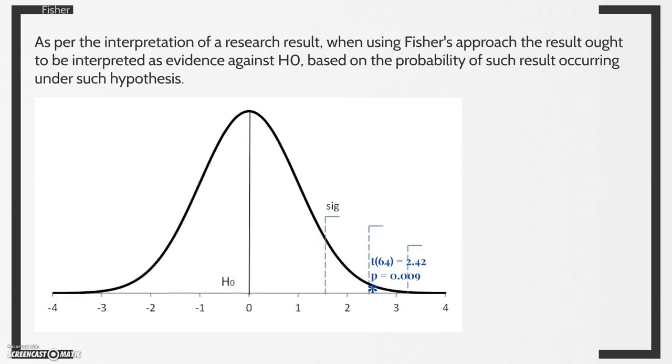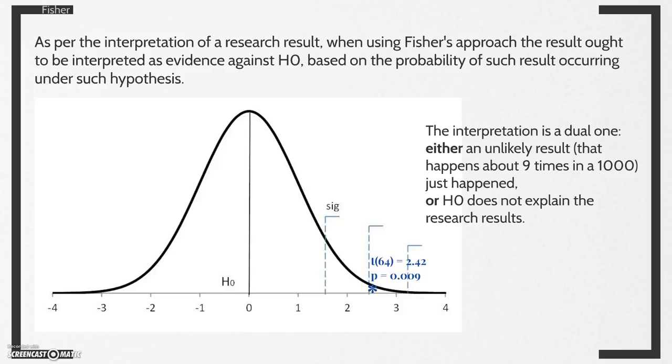As per the interpretation of a research result, when using Fisher's approach, the result ought to be interpreted as evidence against the null hypothesis, based on the probability of such result occurring under such hypothesis. The interpretation is a dual one. Either an unlikely result that happens about nine times in a thousand just happened, or the null hypothesis does not explain the research results.